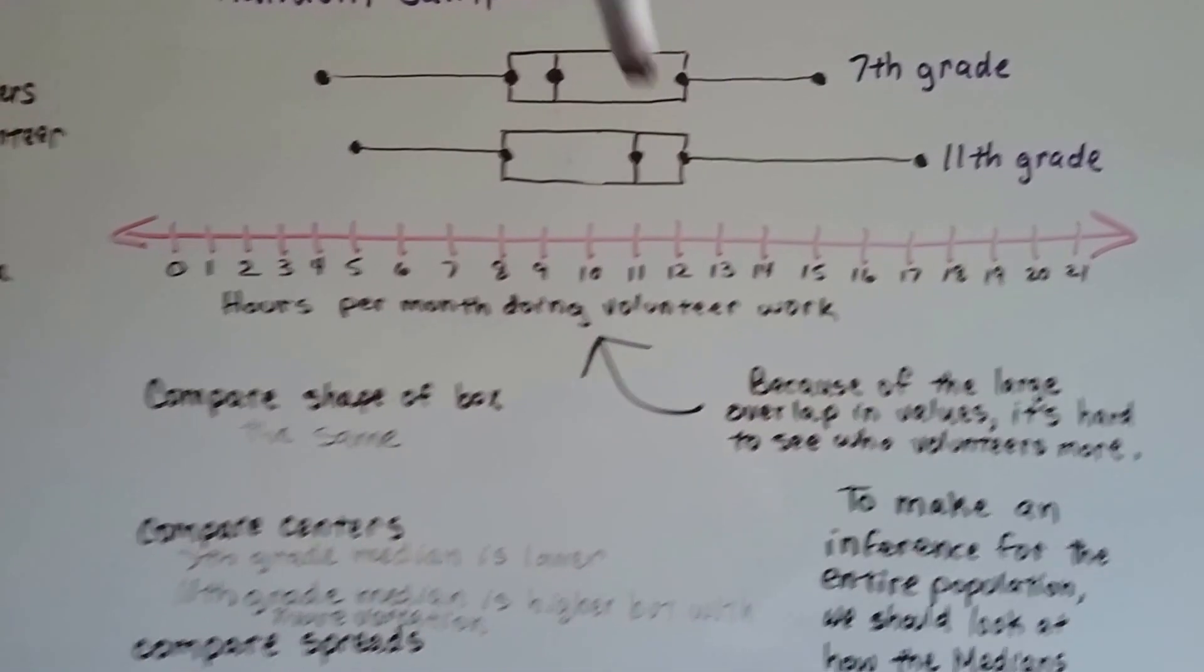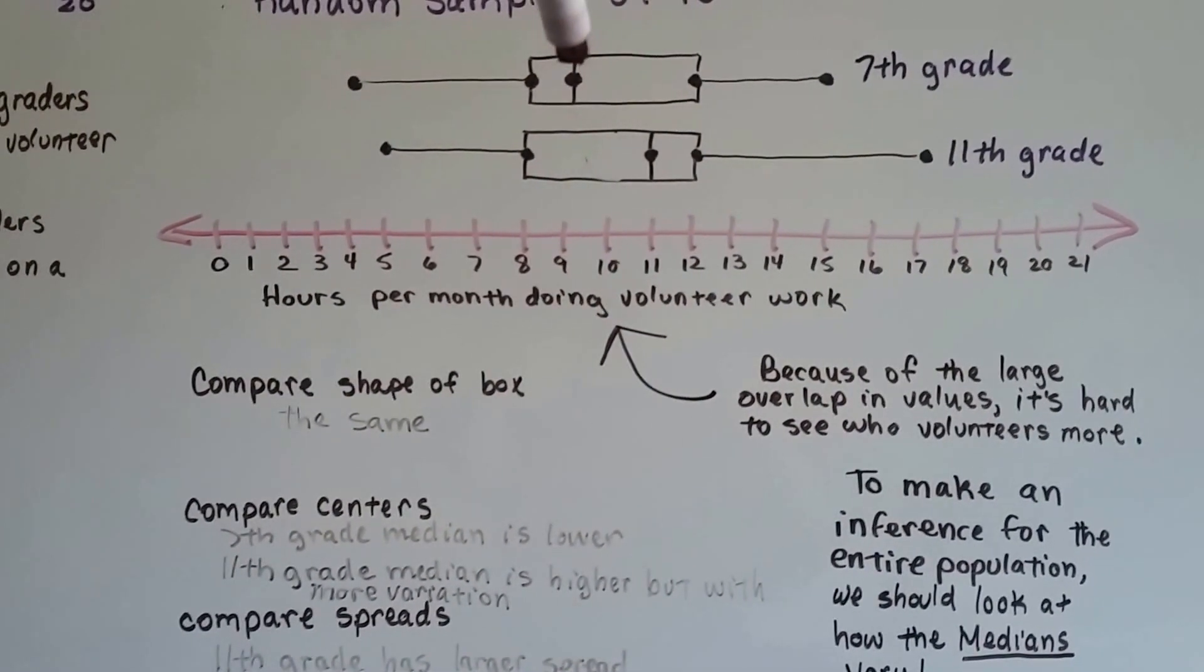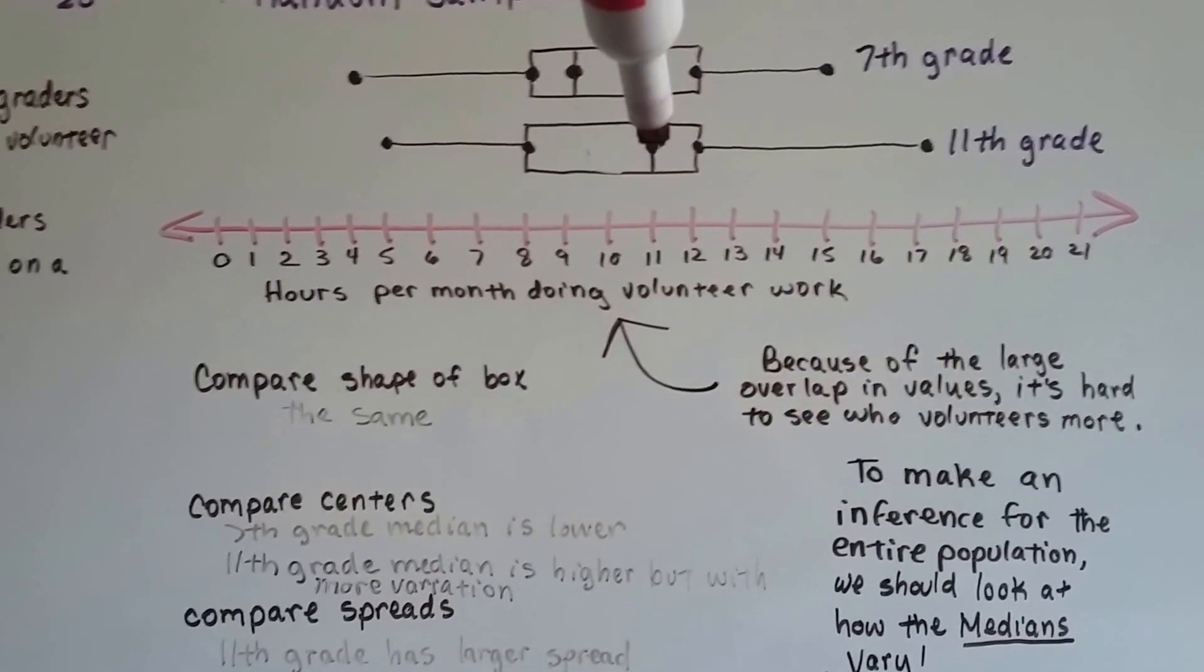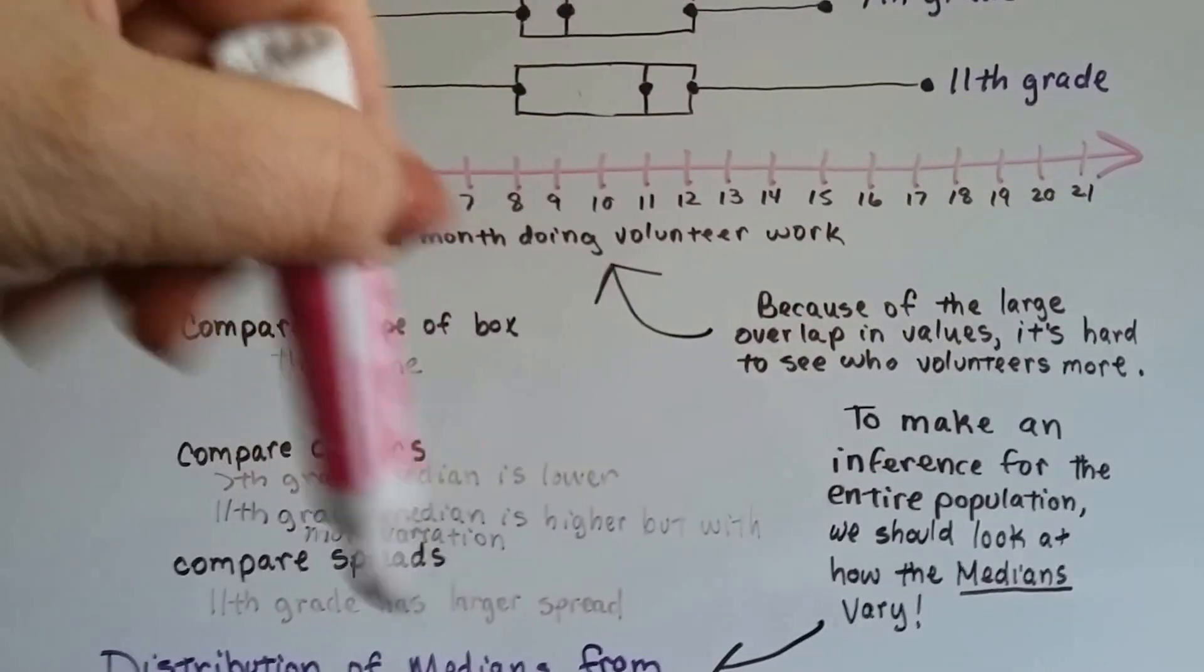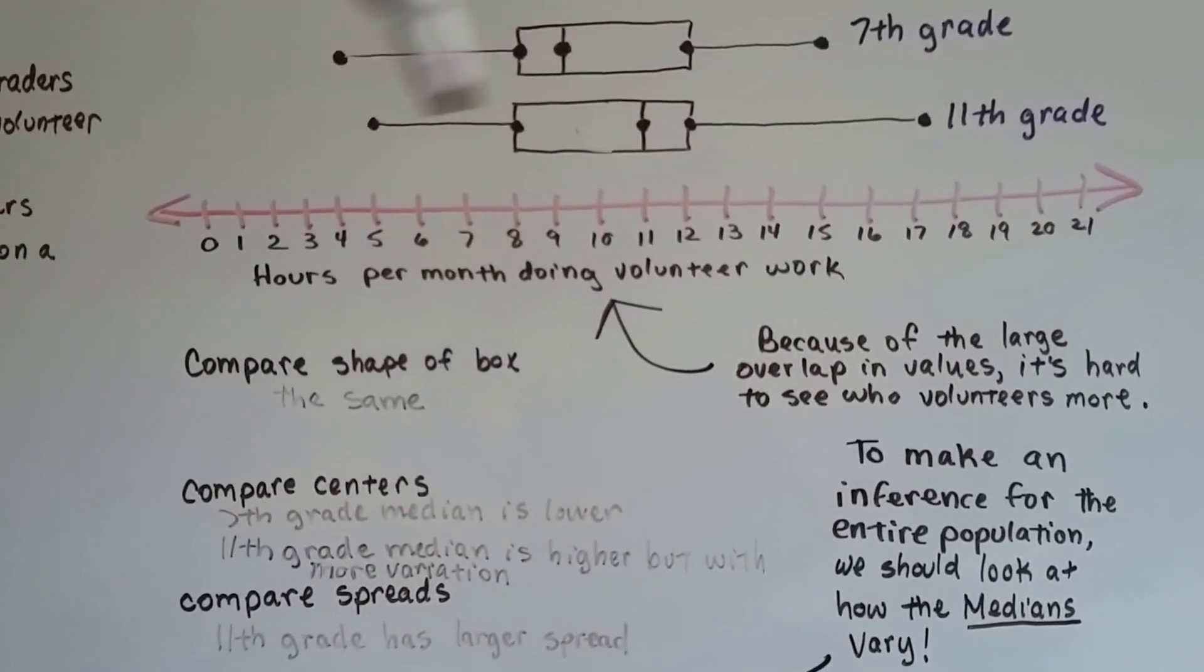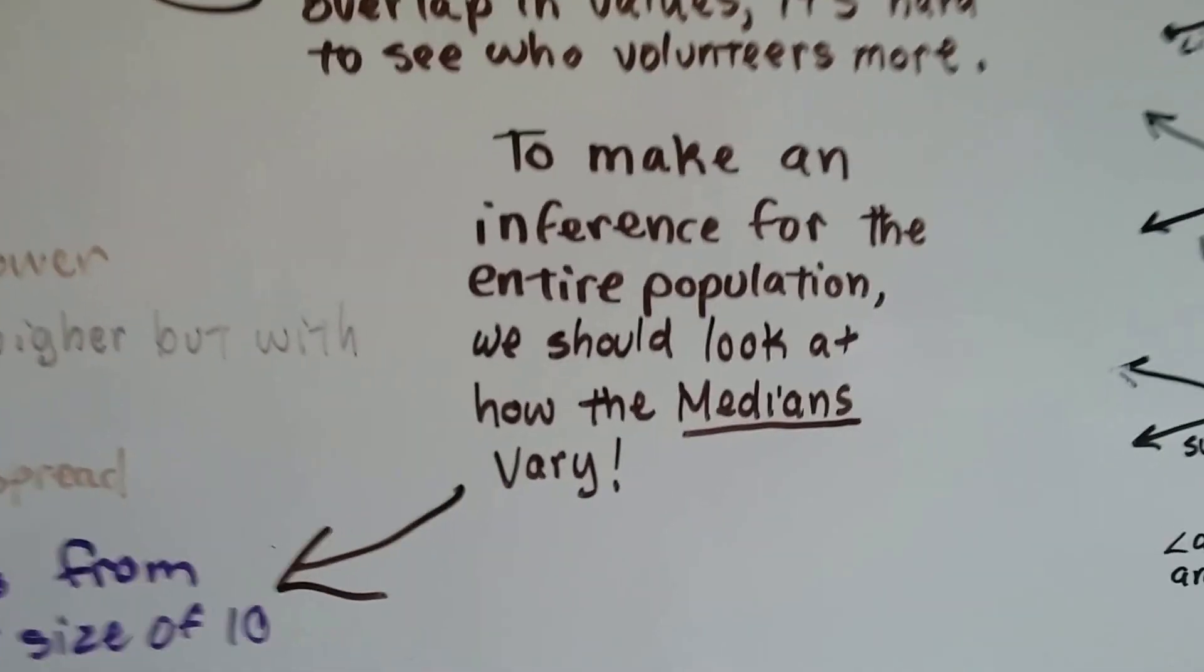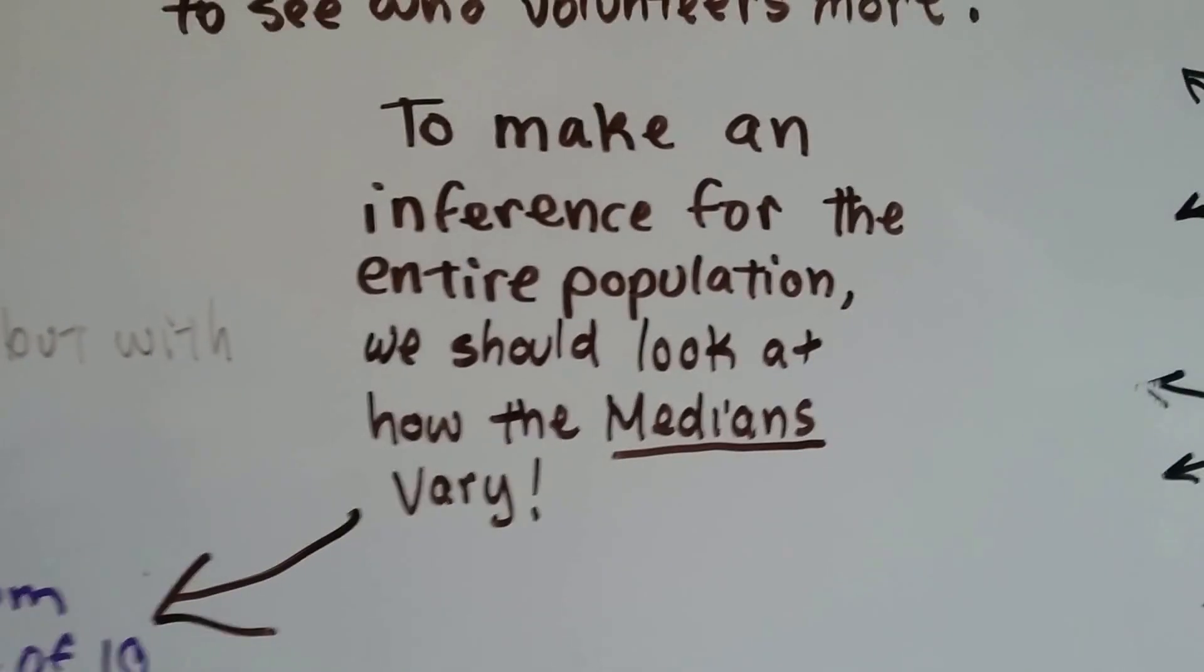We can look at the shape of the boxes and they're pretty much the same. The centers, we can see the 7th grade is lower and the 11th grade is higher, but there's more variation. And if you compare the spreads, we can see the 11th grade has a little bit more of a spread, but it's shorter here and longer here.